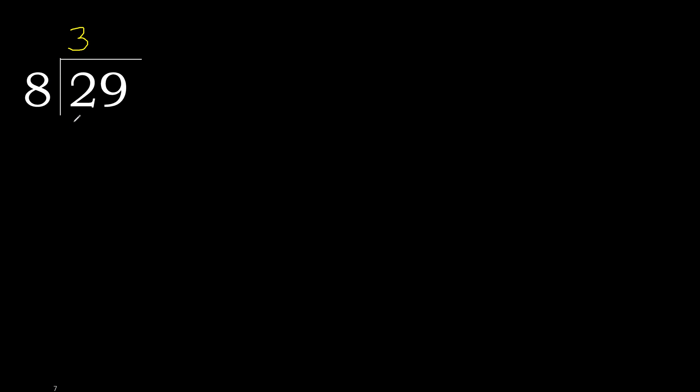29 divided by 8. 2 is less, therefore next. 29 is not less, therefore with 29. 8 multiplied by which number is nearest to 29 but not greater? 8 multiplied by 4 is greater. 8 multiplied by 3: 24 is not greater. Subtract.